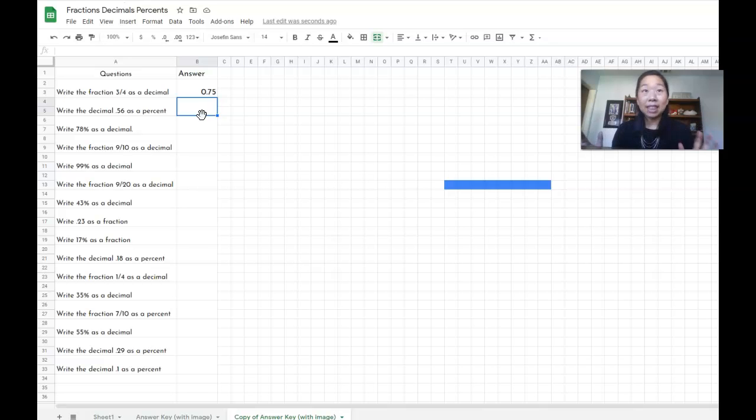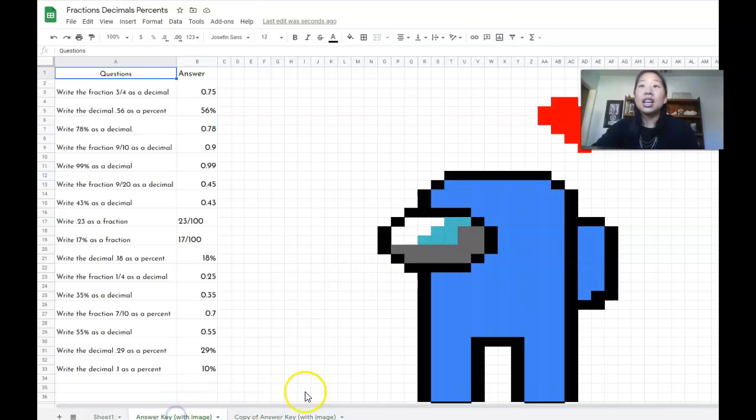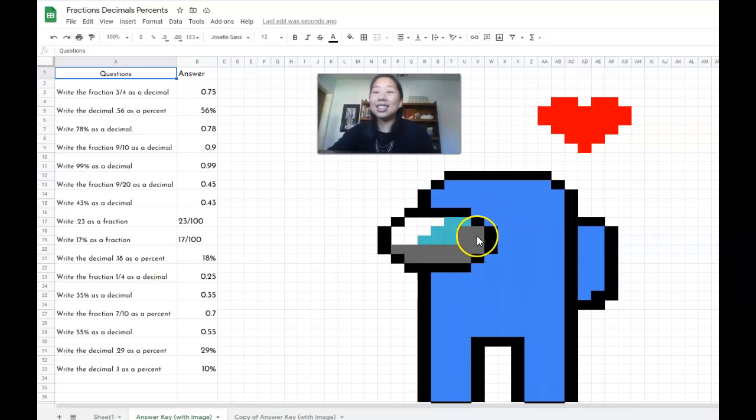It's going to end up being a really awesome picture at the end. The next question says write the decimal 0.56 as a percent. So 0.56 is going to be 56%. Notice how this black line came up. If let's just say I got it wrong, I accidentally typed in 59, notice how nothing happened. So your students can easily self-check this. Let me show you actually what it looks like at the very end.